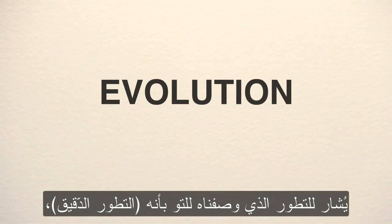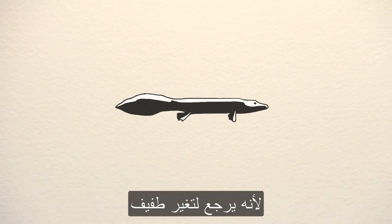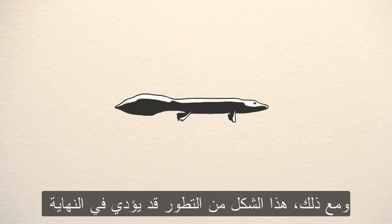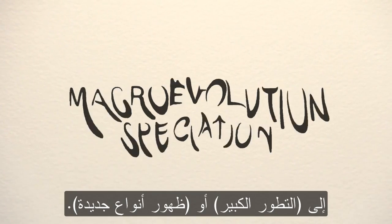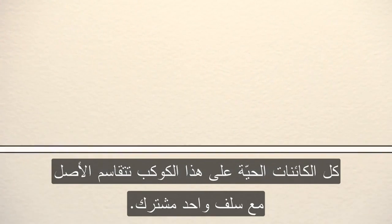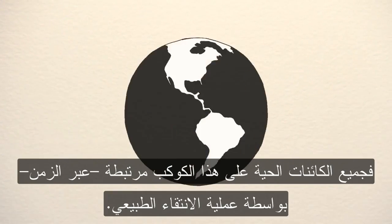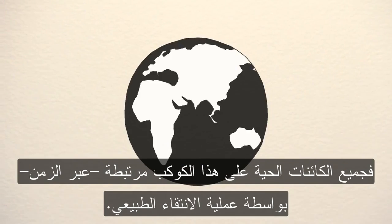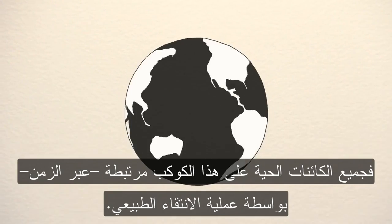The evolution that we have described is referred to as microevolution because it refers to a small change. However, this form of evolution may eventually lead to macroevolution or speciation. Every organism on the planet shares ancestry with a single common ancestor. All living organisms on the planet are connected back in time through the process of evolution.